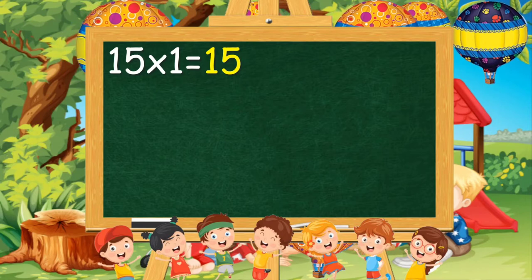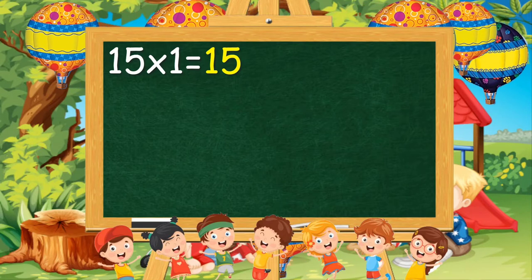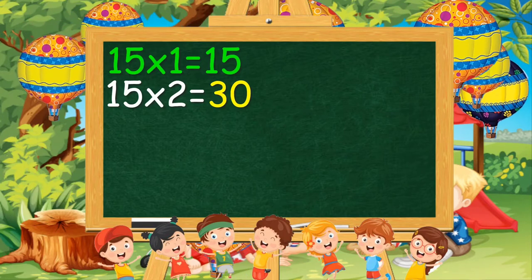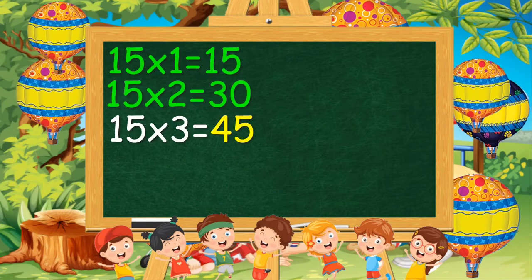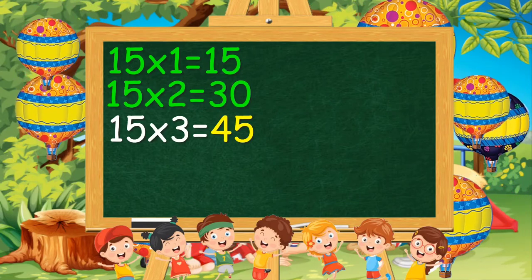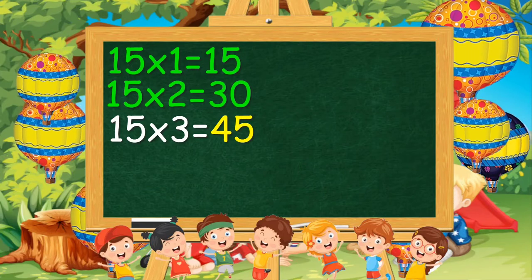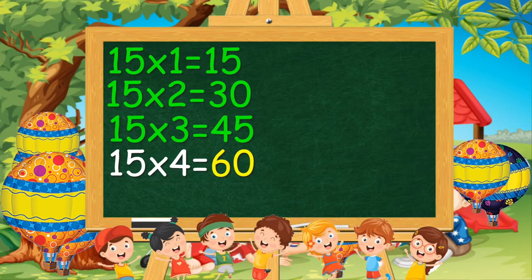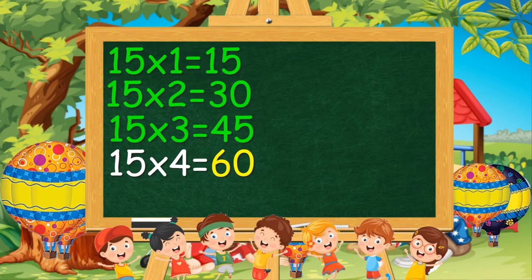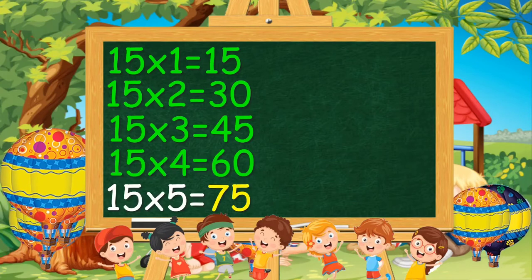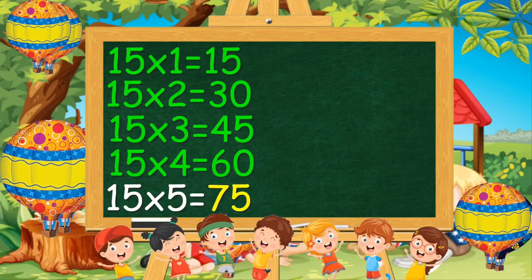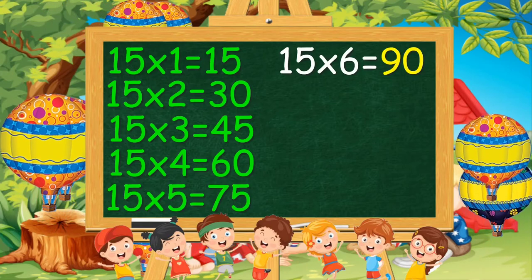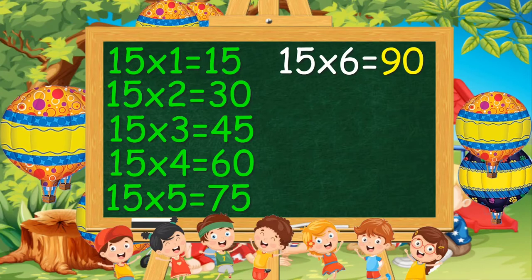15 ones are 15. 15 twos are 30. 15 threes are 45. 15 fours are 60. 15 fives are 75. 15 sixes are 90.